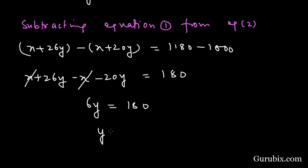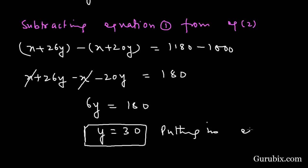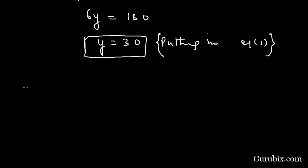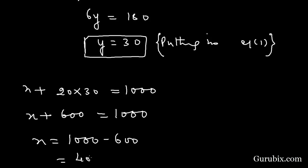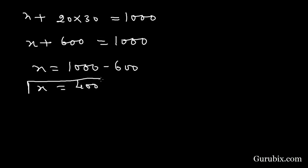This means Y equals to 30. Now we substitute this value into equation number 1 to get the value of X. Putting Y equals 30 in equation 1: X plus 20 times 30 equals to 1000, so X plus 600 equals to 1000, which means X equals to 1000 minus 600, that is 400. So the value of X is 400.